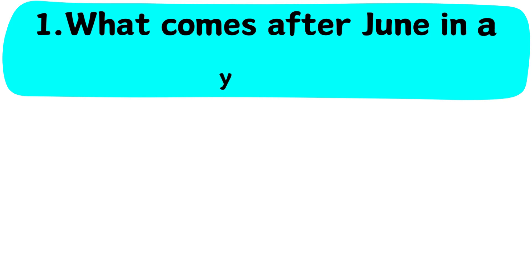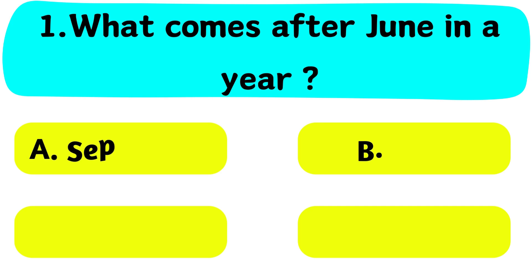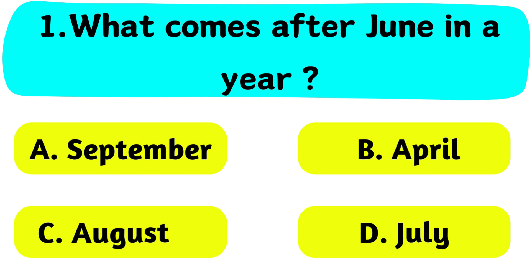Question No. 1. What comes after June in a year? A. September, B. April, C. August, D. July.